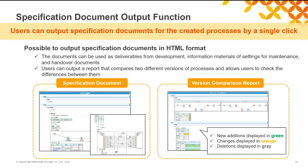Lastly, I'd like to explain the specification document output feature, which our customers greatly appreciate. It allows you to output the integration process you created as an HTML-style specification file. This specification includes all of the designer's screenshots and setup records. You can also output a version comparison report, which allows you to easily figure out the difference between two versions. This feature can be utilized in various cases such as confirming the setup details after development is done, handing over to operation personnel, or checking for additional development.